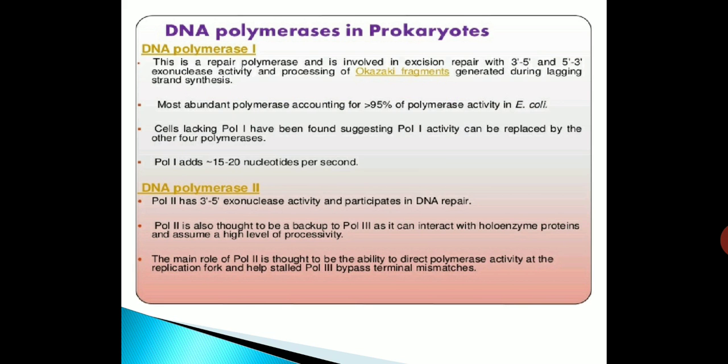DNA polymerase 1 in prokaryotes is a repair polymerase involved in excision repair, possessing 3-prime to 5-prime and 5-prime to 3-prime exonuclease activity, and in processing of Okazaki fragments generated during lagging-strand synthesis. It is the most abundant polymerase, accounting for more than 95 percent of polymerase activity in E. coli. Cells lacking polymerase 1 have been found, suggesting its activity can be replaced by the other four polymerases. Pol 1 adds nearly 15 to 20 nucleotides per second.